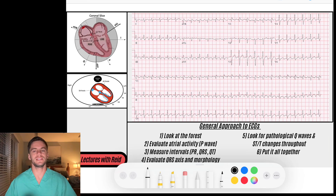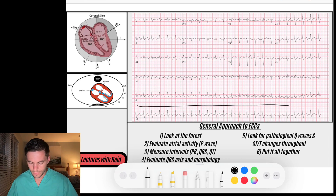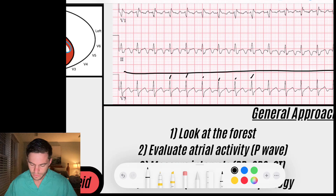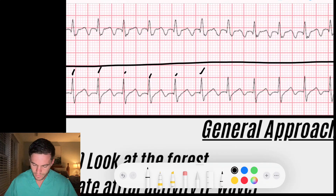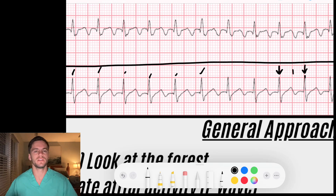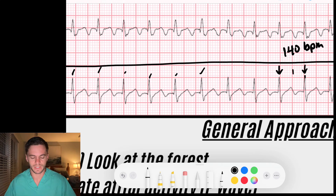When I look at this EKG, I notice a few things that are different. When I scan through, I notice there's a very rapid rate and it seems to be quite regular. I see QRSs firing off quite regularly, occurring at a rate of — we have a QRS landing on a solid line, another just after a solid line. So that's 300, 150 — probably just a little bit slower than 150. We'll say 140 beats per minute. So we have a regular narrow complex tachycardia.